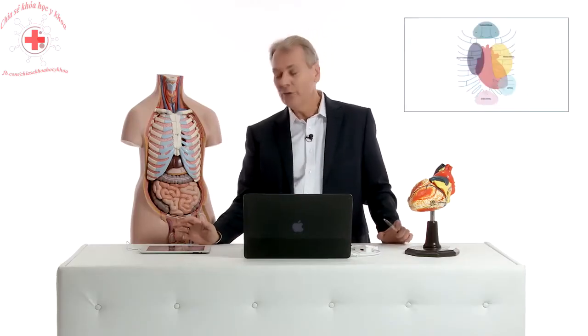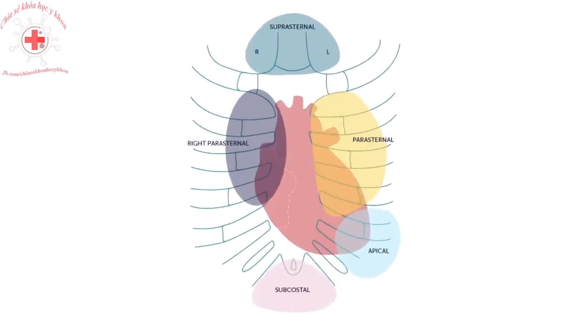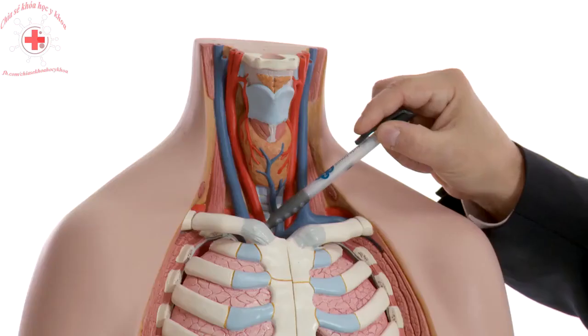There are windows which we define as the parasternal window, the apical window, the subcostal window, the right parasternal window, and also the substernal window which is basically right up here. The size of these windows varies greatly and frequently you will not be able to image all patients from all windows with equal image quality.